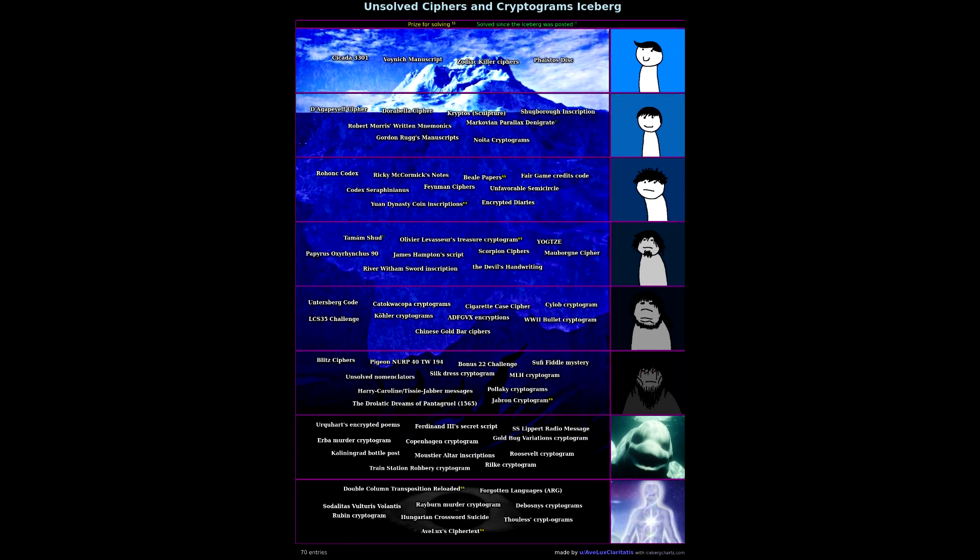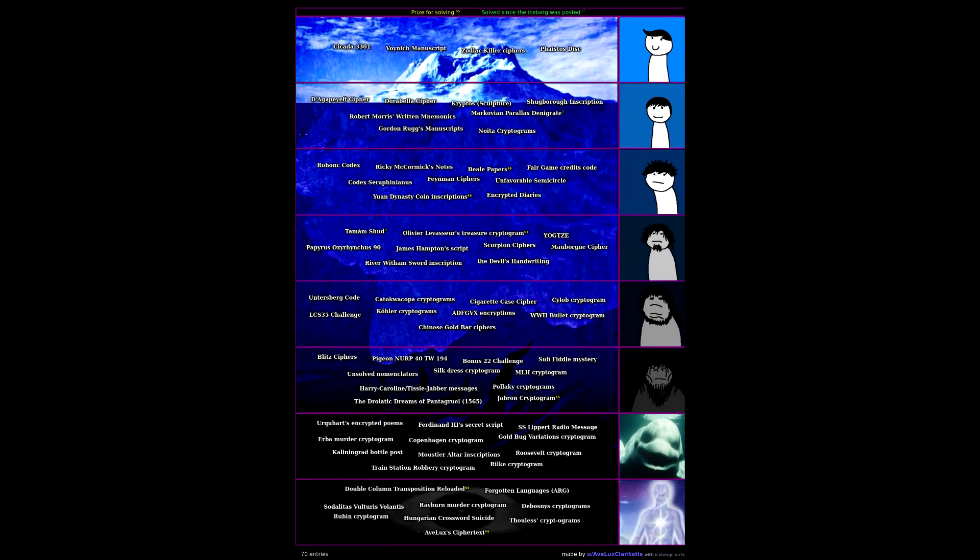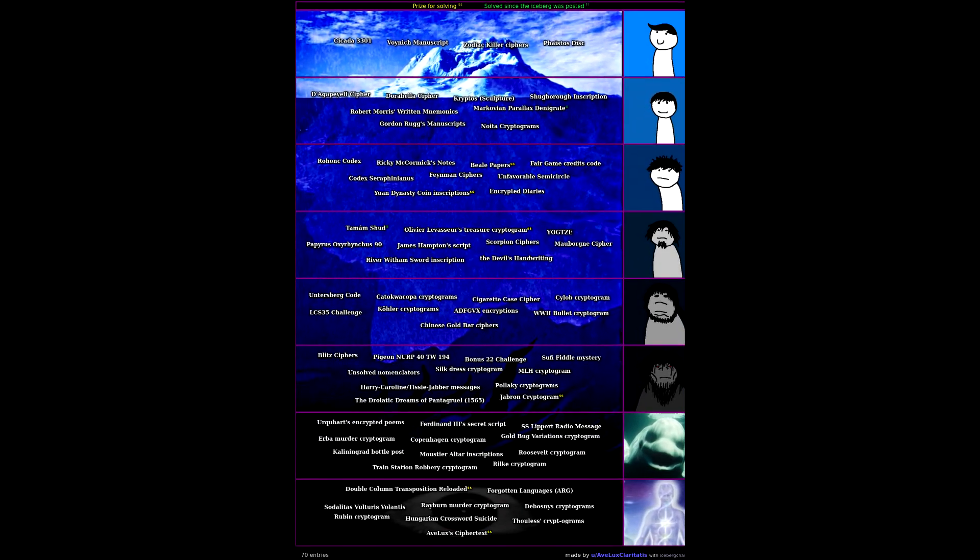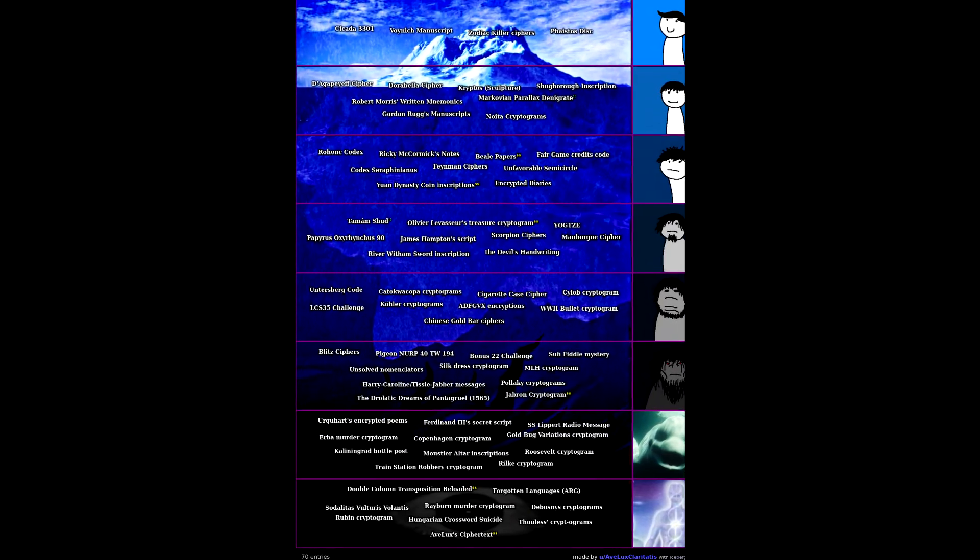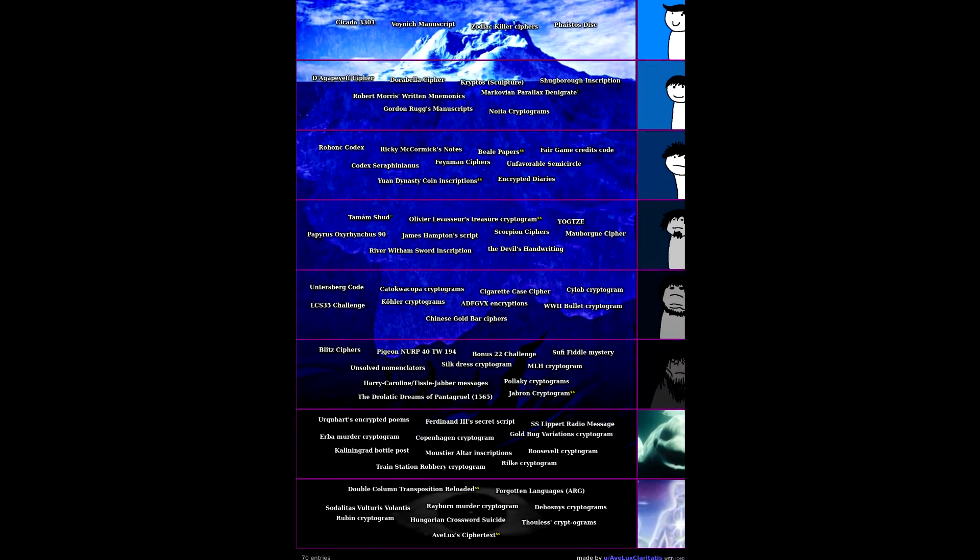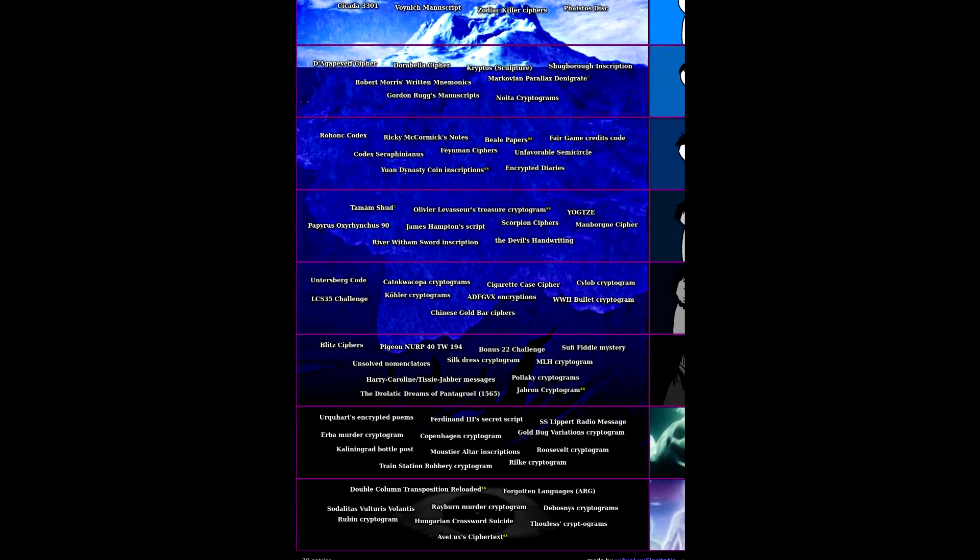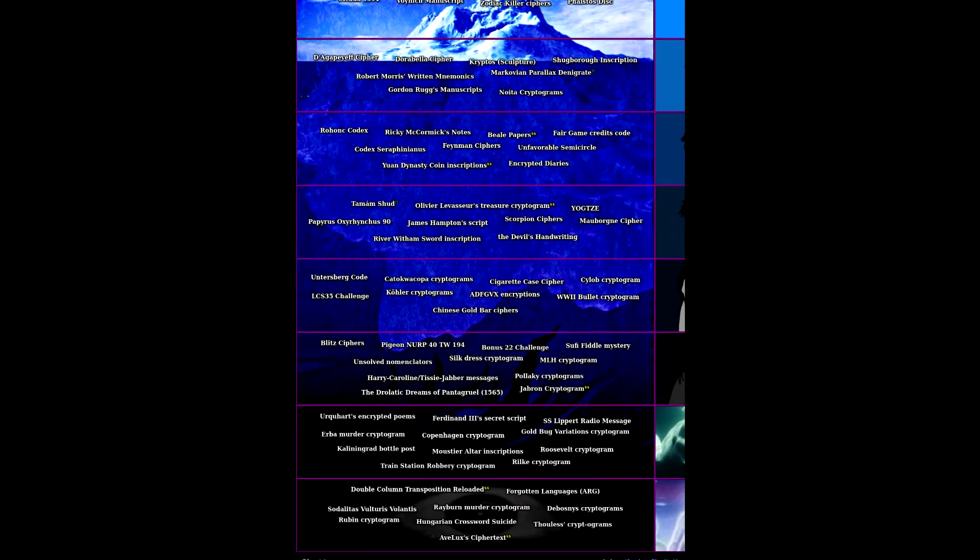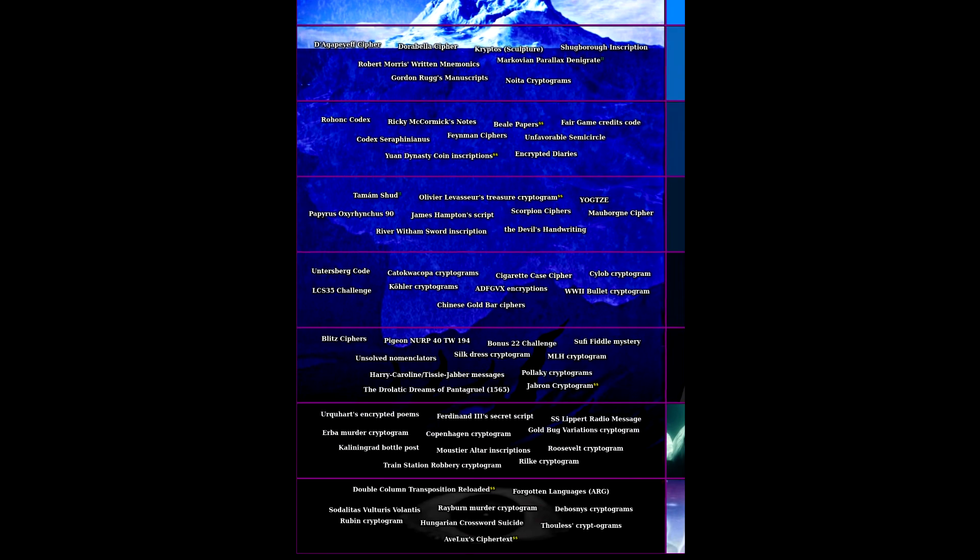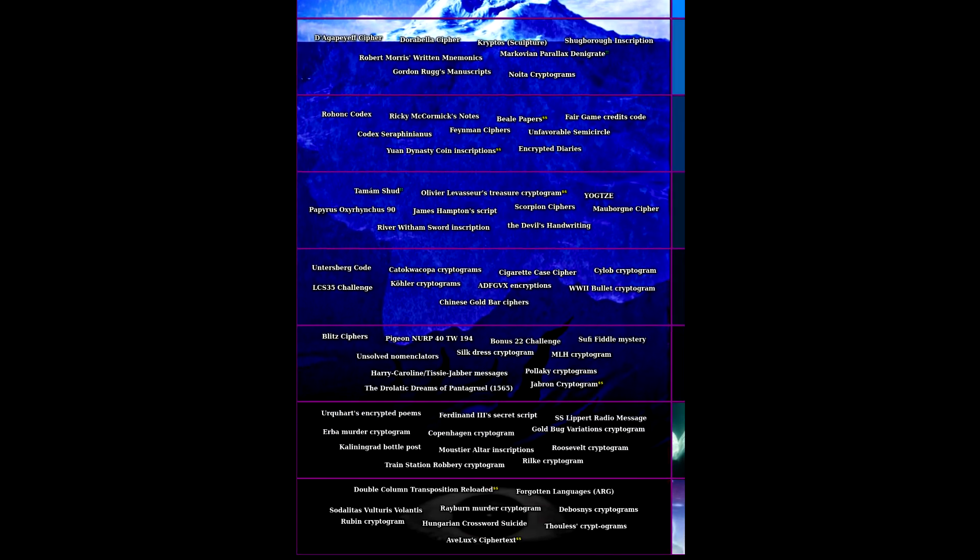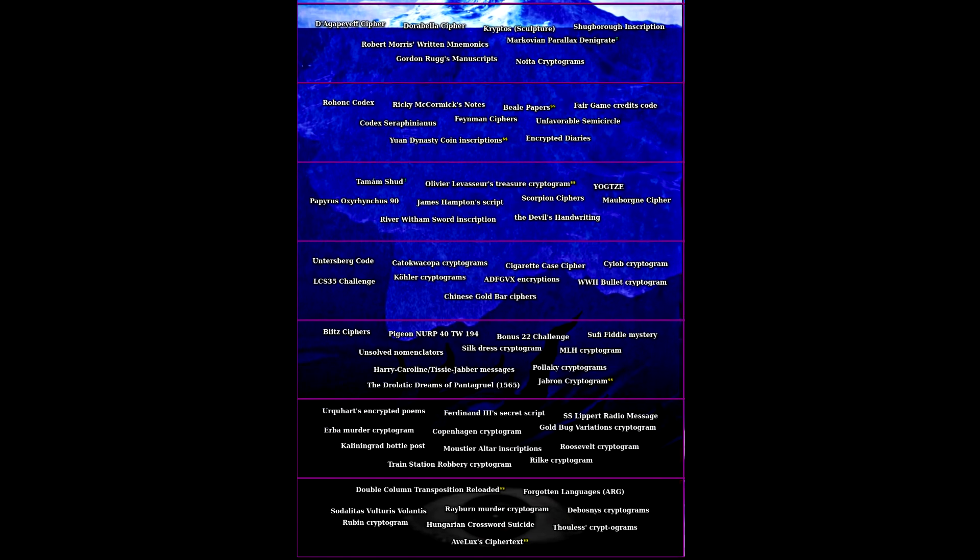If you missed the previous part of this series, it covered the first four layers of the iceberg and contained all of the useful explanations of what iceberg charts are, credits for this particular iceberg, shout out again to AveLuxClaritatus who was very nice to me on Reddit and who made this iceberg, and also some generalized info on methods of decoding cryptograms and ciphers. I'm going to presume you either watched the last part or are already familiar with this sort of stuff, because I may reference some of the things mentioned in the last video without explanation in this one. So that said, I think we can go ahead and get right into the last part of this iceberg.